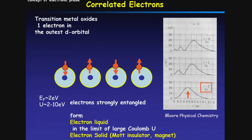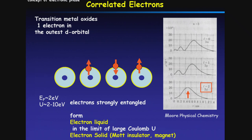This Coulomb repulsion is even larger than a typical Fermi energy of about 2 electron volts. As a result, the motion of electrons is blocked by Coulomb repulsion. If an electron wants to hop to the next site and another electron is already sitting there, it will be pushed back. The electron has to find a vacant site to hop around. Because of this, electrons are strongly entangled — that's why we call these correlated electrons.